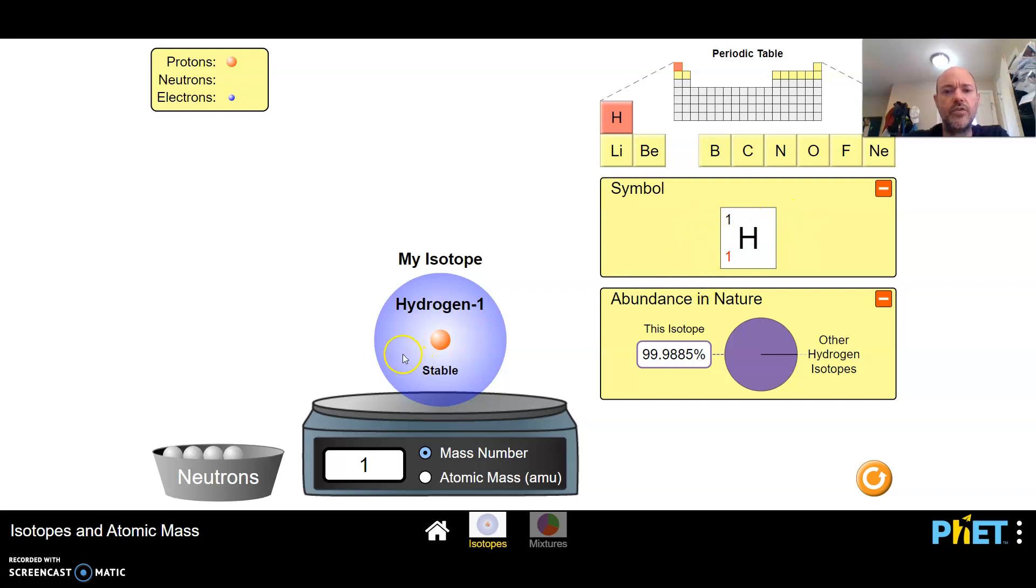So we see here the symbol for hydrogen one, atomic number of one right here, mass number of one. Atomic number means it has one proton, mass number means it has one proton and neutron combined because it has no neutrons in it right now.